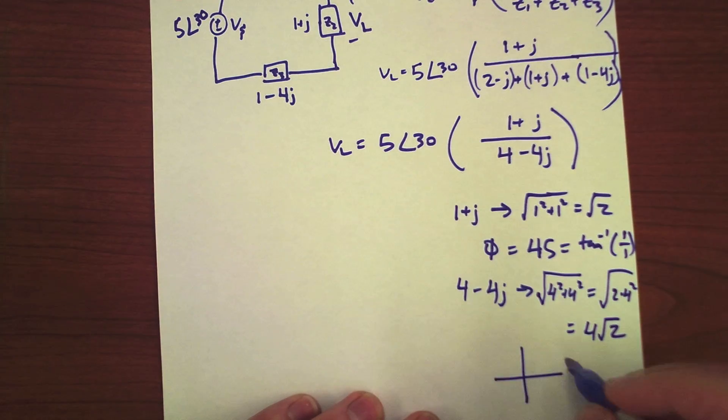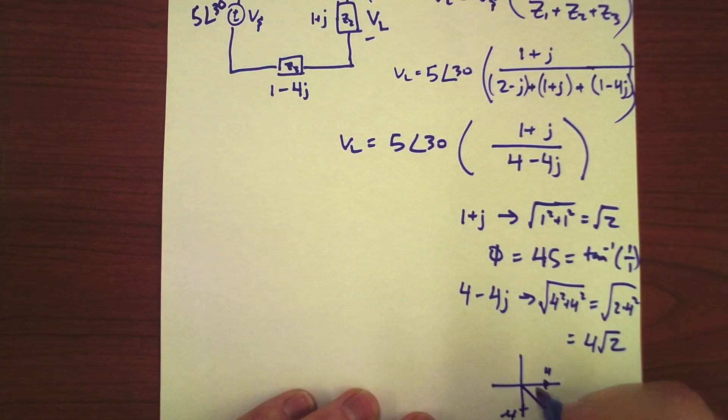And for our angle, we know that we go real is positive 4, imaginary is minus 4. So, this is our angle we're looking for. And that's going to be minus 45 degrees, which is equal to tangent inverse of minus 4 over 4.